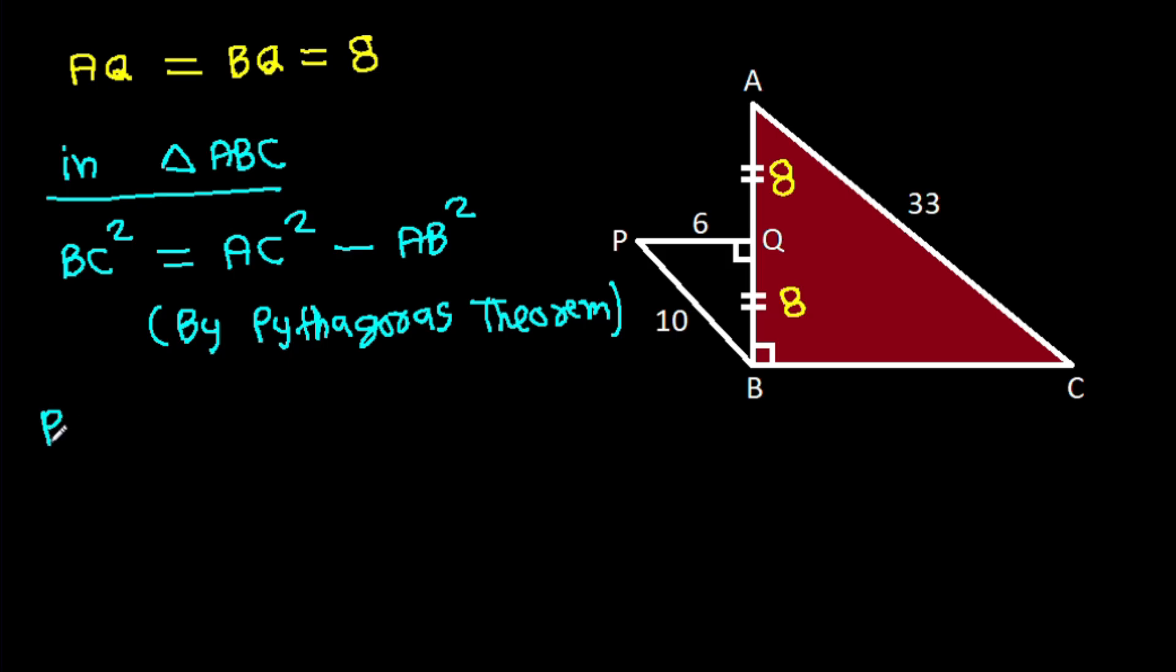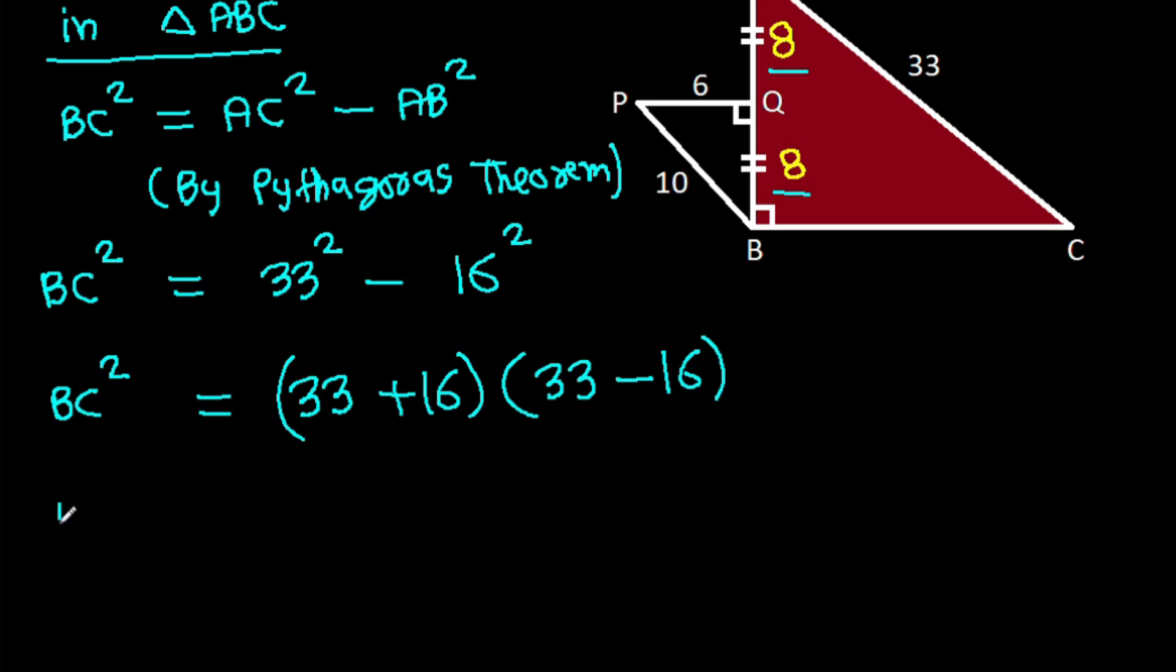And BC² is 33² minus AB is 8 plus 8, that will be 16². And BC² will be 33 plus 16 times 33 minus 16. And BC² will be 49 times 17.